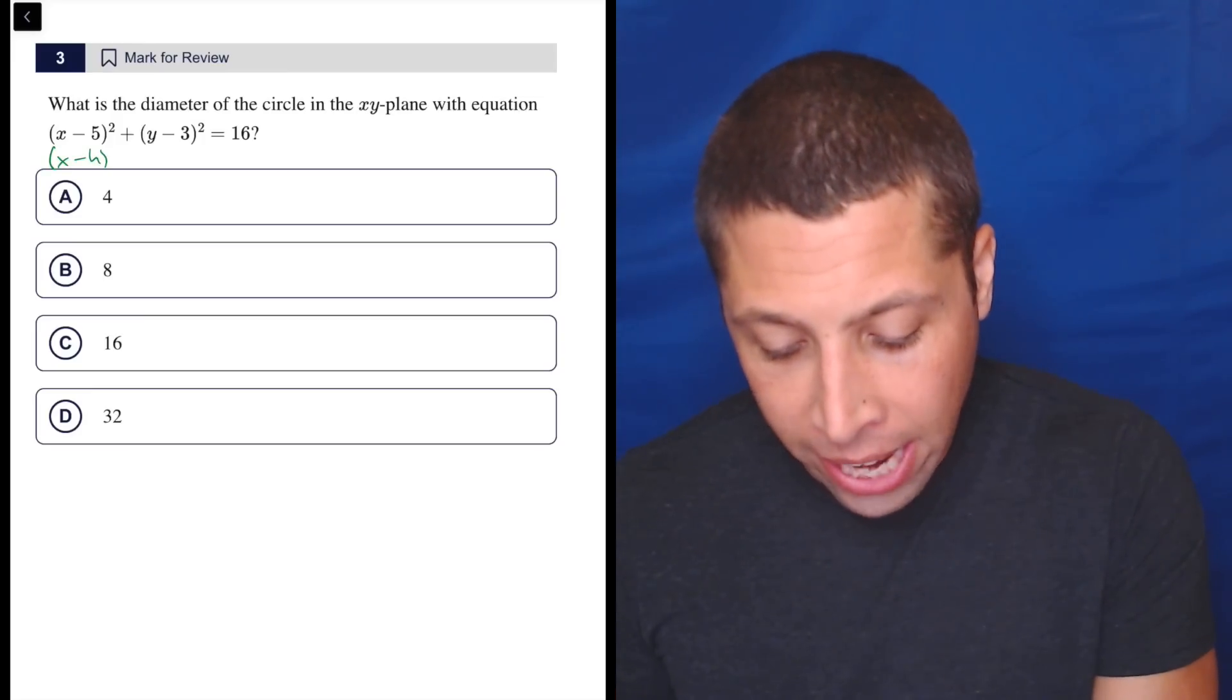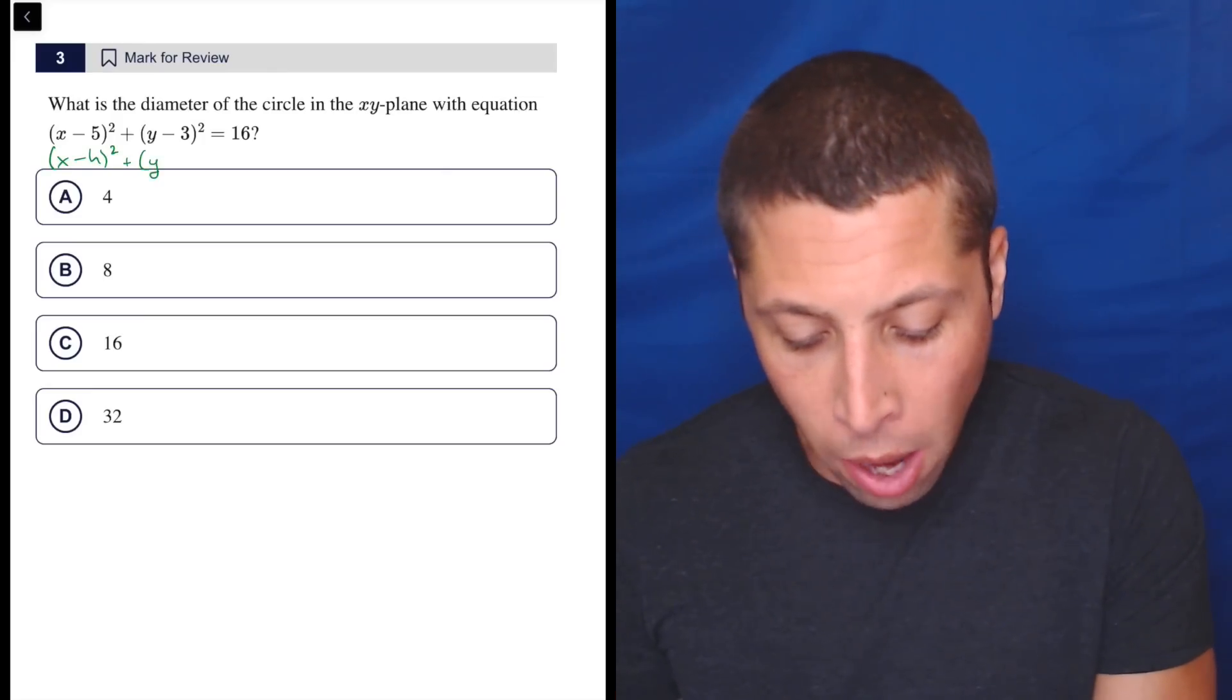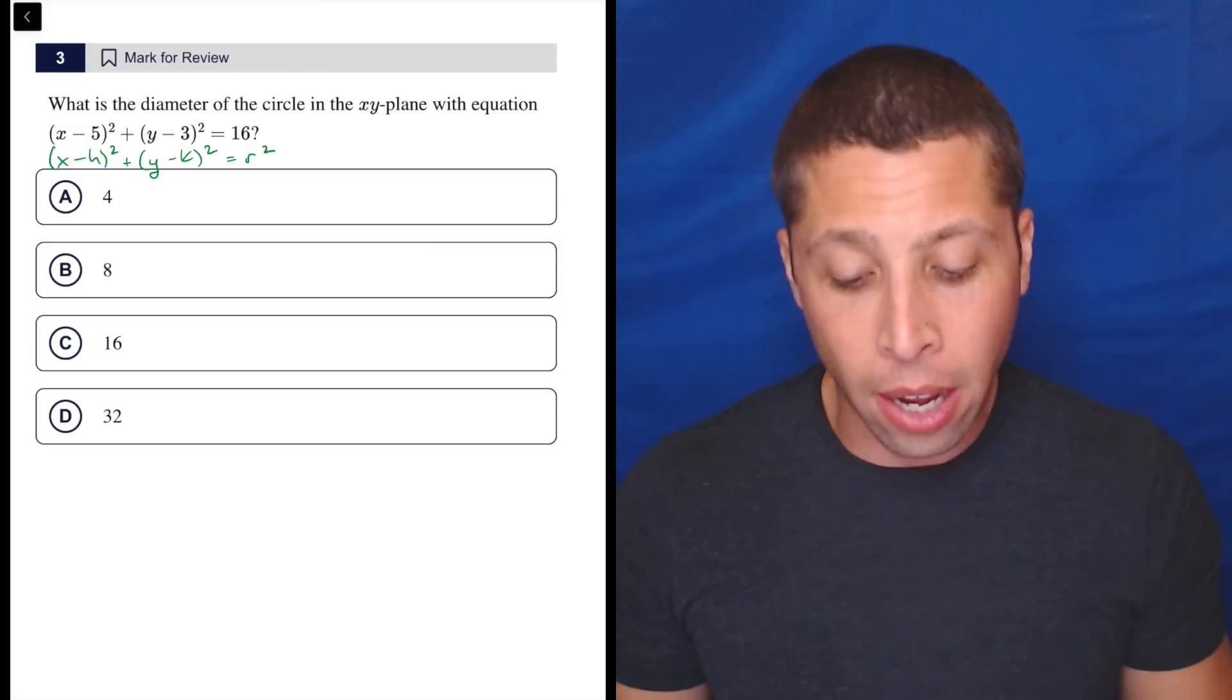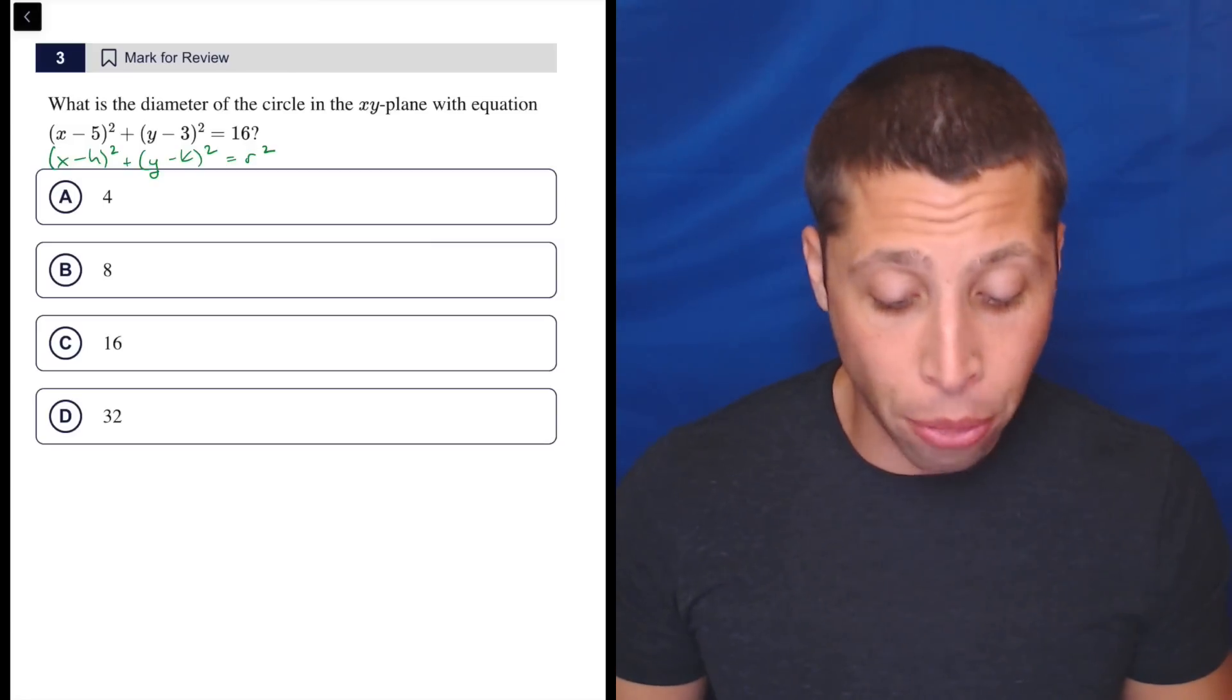It is x minus h squared plus y minus k squared equals r squared. So we get just from this formula the center, which is going to be (5, 3).